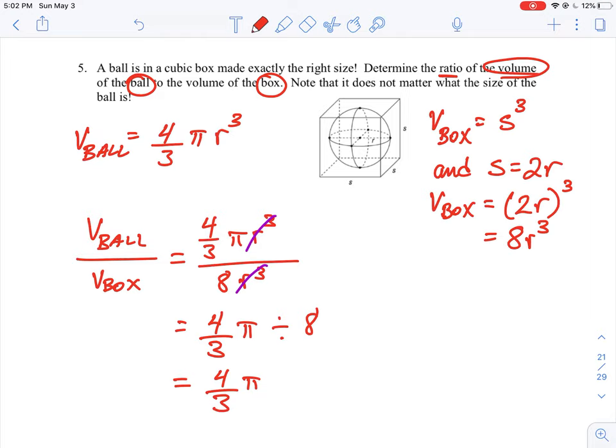We'll just do a little bit more algebra work here. We're going to have four-thirds pi. Now remember to divide by a number is the same as multiplying by its reciprocal, so we're going to multiply by the fraction one over eight. That lets us simplify this, which is going to give us four pi over twenty-four.